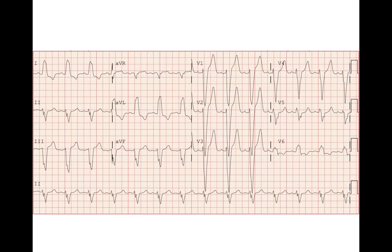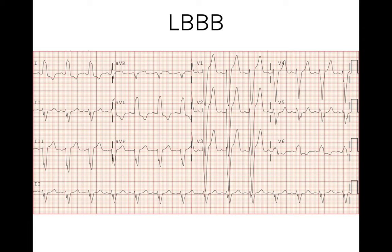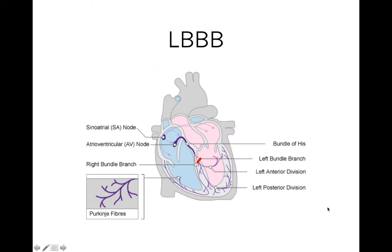What do we mean by SVT with aberrancy? This is an example of sinus rhythm with a left bundle branch block — there's a wide negative QRS in lead V1 and an RSR' in lead V6. If this patient develops supraventricular tachycardia such as atrial flutter, it will look like a wide complex tachycardia, but it's actually SVT from the atrium. In left bundle branch block, there is conduction along the right bundle and then slow depolarization through the muscle towards the left ventricle, producing a large deflection away from V1 and towards V6.